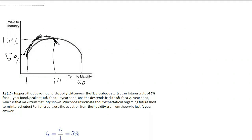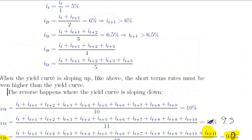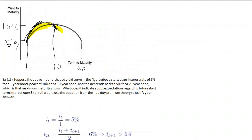So the short-term rates are going to go up here at the beginning, pulling up the yield curve. But once the yield curve reaches its peak and starts to go down, they must be pulling it down. Each time you go along you're adding an additional term — here you're adding the i sub t+11 term — and you're bringing down the multi-year interest rate, i.e. the 12-year interest rate, to be lower than the 11-year interest rate. It must be that i sub t+11 is less than i sub 12t, i.e. the short-term interest rate must be lower than the multi-year interest rate.